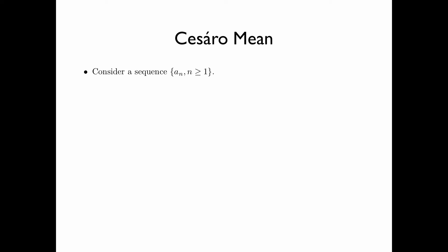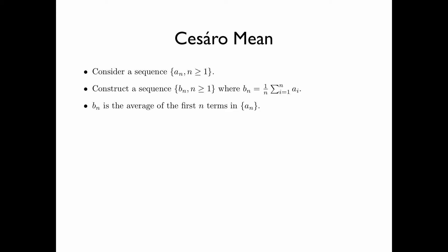We now introduce a notion called the Cesaro mean. Consider a sequence a_n, n greater than or equal to 1. Now construct another sequence b_n, n greater than or equal to 1, where b_n is equal to 1 over n times the summation of a_i, i from 1 up to n. Here, b_n is the average of the first n terms in the sequence a_n. The values b_n, n greater than or equal to 1, are called the Cesaro means of the sequence a_n.